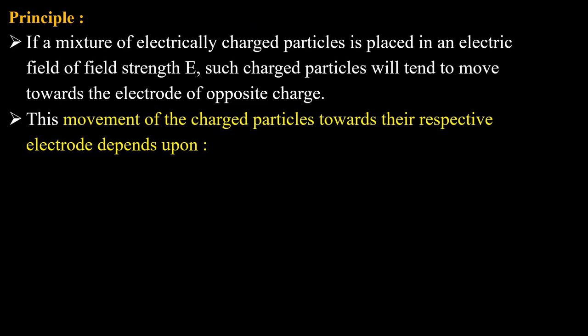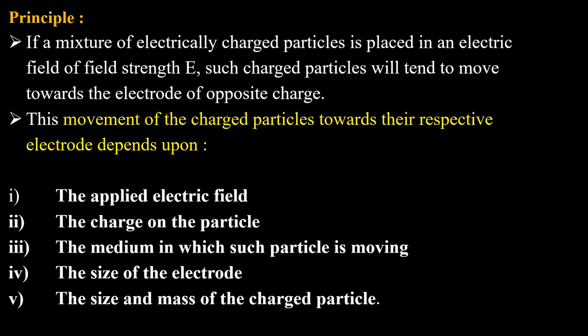Principle of electrophoresis: if a mixture of electrically charged particles is placed in an electric field of electric strength E, such charged particles will tend to move towards the electrode of the opposite charge — cations towards the cathode and anions towards the anode. This movement of charged particles towards the respective electrode depends upon various factors: (1) the applied electric field, (2) the charge on the particular particle, (3) the medium in which the particle is moving, (4) the size of the electrode, and (5) the size and mass of the charged particle.